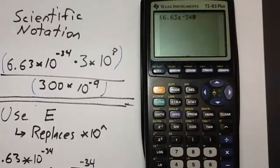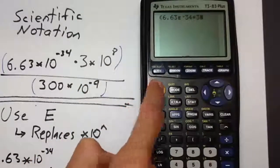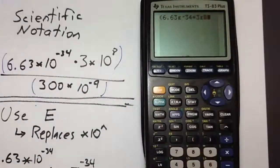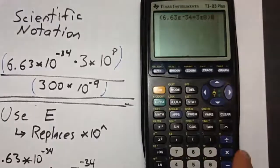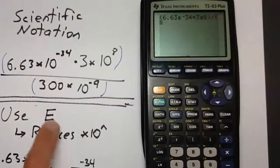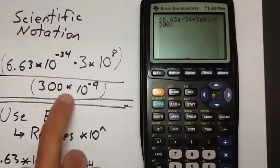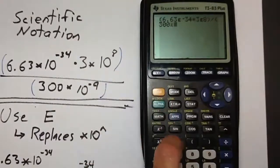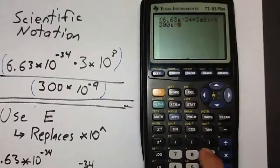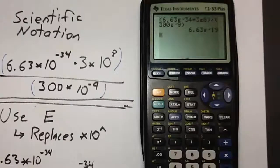Continue to the next number: press times 3, then 2nd, uppercase E, 8. No need to say 10, no need to use the exponent. Close the parentheses to end the numerator, place a division sign, then open parentheses for the denominator. Enter 300, then 2nd, uppercase E — rather than times — negative 9. Close the parentheses and press enter. Our answer is 6.63 times 10 to the negative 19. The uppercase E in the middle just means times 10 raised to whatever comes next.